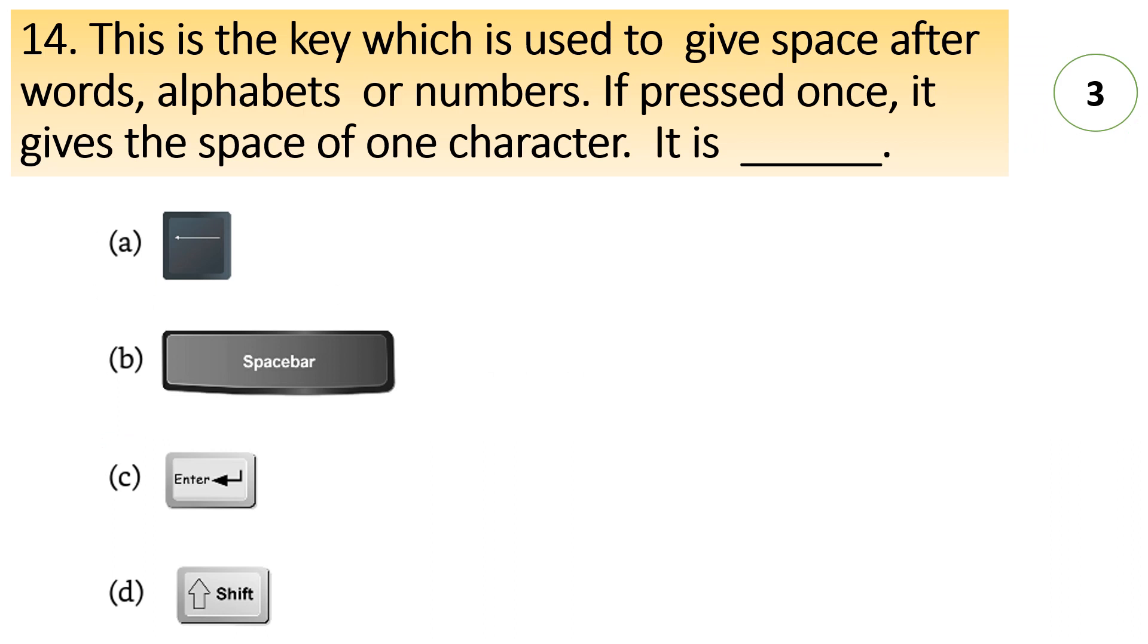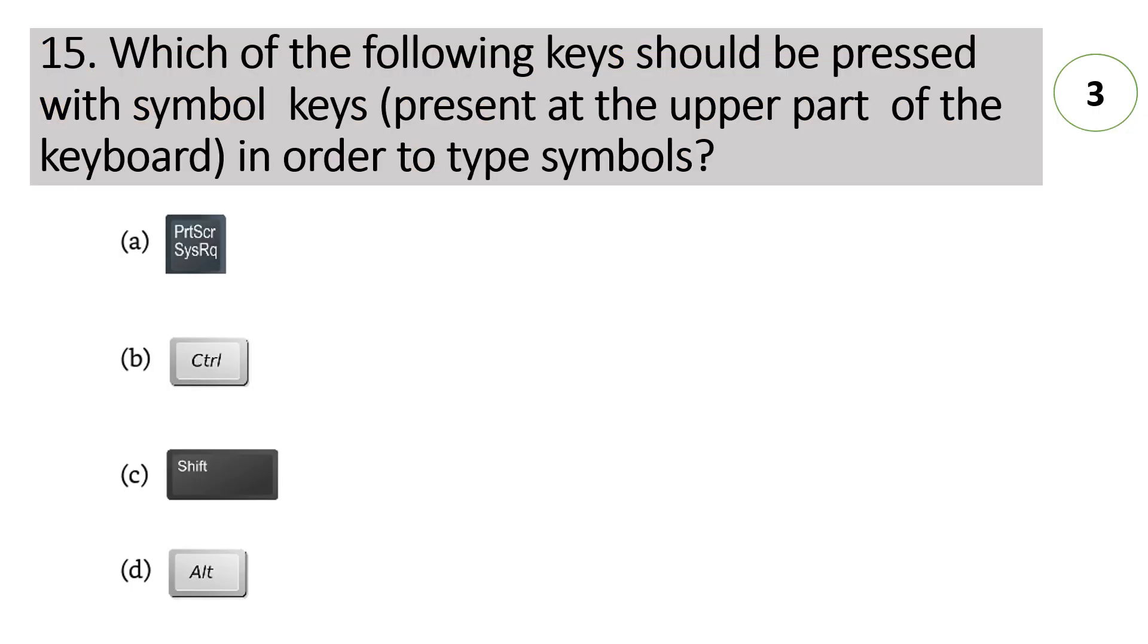This is the key which is used to give space after word alphabets or numbers. If pressed once it gives space of one character, it is option B. spacebar. Which of the following key should be pressed with the symbol keys which are present at the upper part of the keyboard in order to type the symbol key.